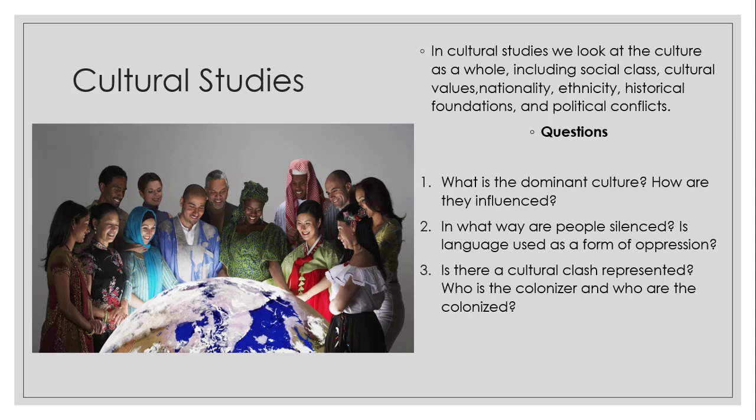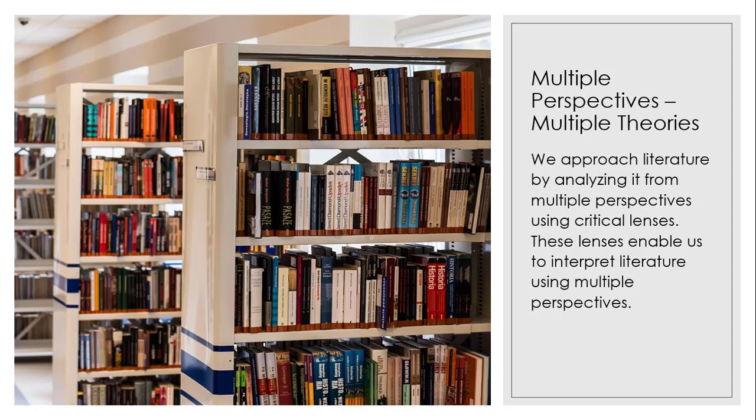Finally, cultural studies. In cultural studies, we look at the culture as a whole, including social class, cultural values, nationality, ethnicity, historical foundations, and political conflicts. Questions that we will ask are: What is the dominant culture and how are they influenced? In what way are people silenced? Is language a form of oppression? Is there a cultural class represented? Who is a colonizer? Who is colonized? Here we see the lamb is certainly silenced — it is turned out and put outside. The class is also silenced because they are not supposed to be engaging in all this activity with the lamb, so they are put to work immediately thereafter. The dominant culture here is school culture, influenced by the teacher's rules in that particular setting. Using critical lenses, we can look at multiple perspectives and multiple theories. We approach literature by analyzing it from multiple perspectives using critical lenses.